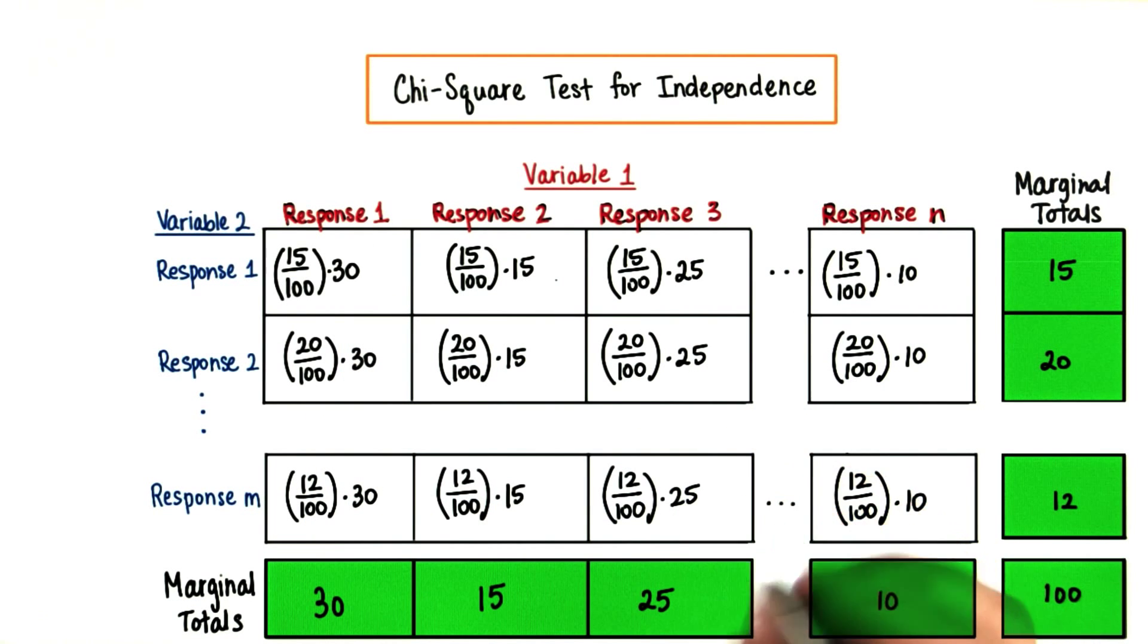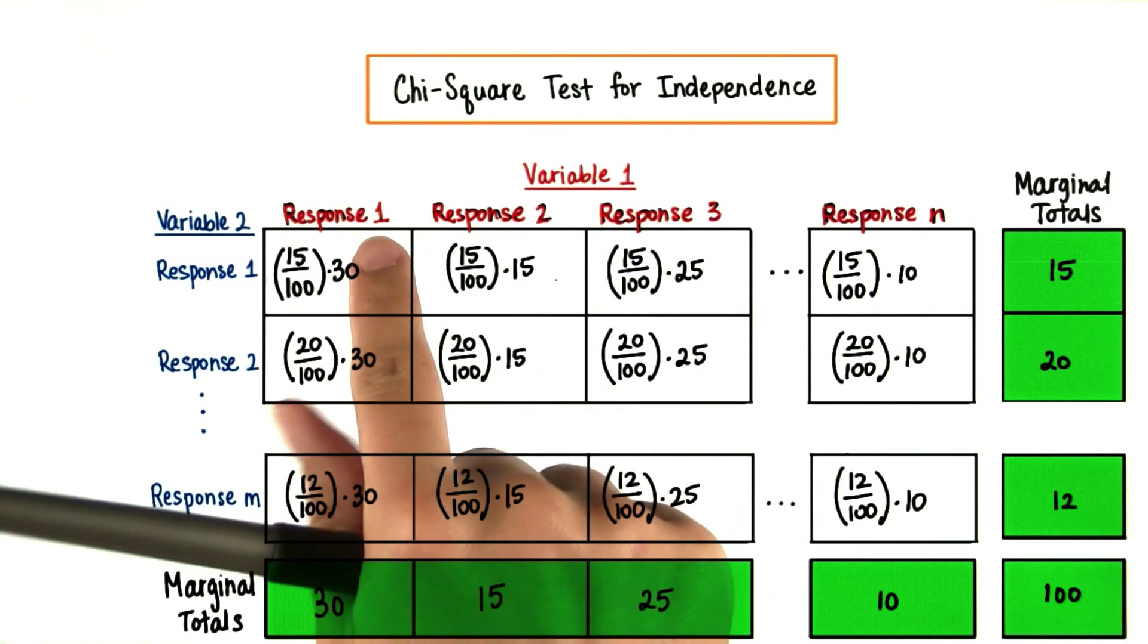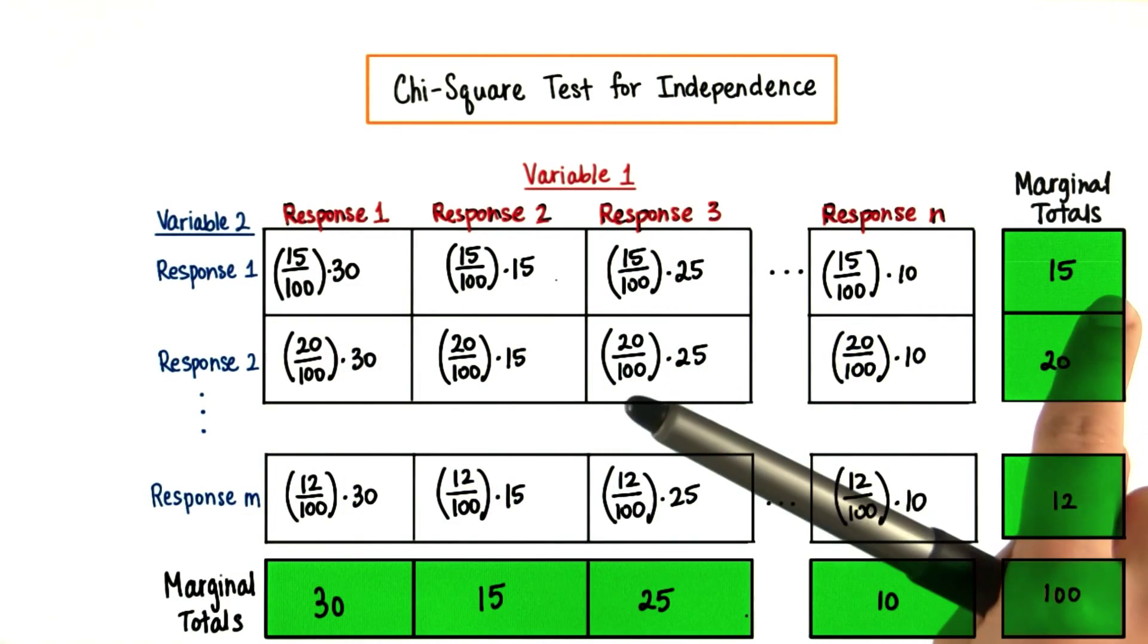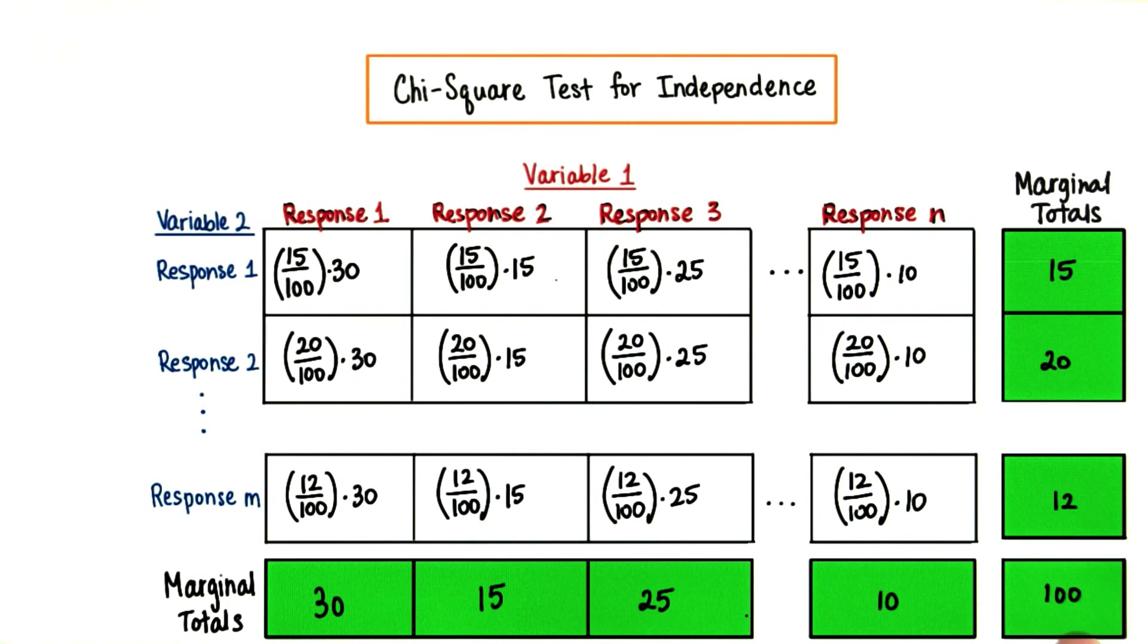If it's easier for you to remember, the expected values are the column totals times the row totals divided by the total total.